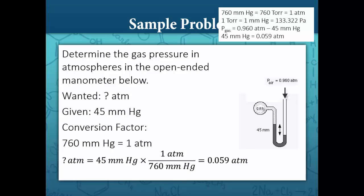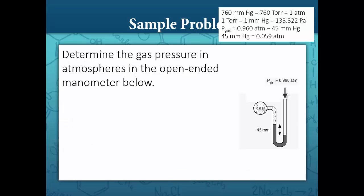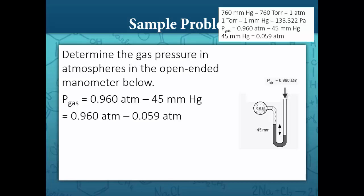This is not our final answer — it's only the height difference between the two sides. Our equation is gas pressure equals 0.960 atmospheres minus 45 millimeters mercury. Since we've converted 45 millimeters mercury to atmospheres, we get 0.960 atmospheres minus 0.059 atmospheres, which gives a gas pressure of 0.901 atmospheres.